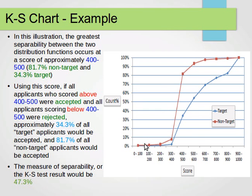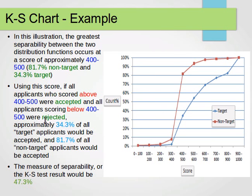The measure of separability, or the KS test result, would be 47.3% — which is the difference between the two cumulative values: 81.7% minus 34.3%, or equivalently the absolute value of 34.3% minus 81.7%. You always want to find the greatest vertical distance, read off the cumulative counts from the y-axis, and then compute the KS result by subtracting the corresponding cumulative counts for the target and non-target.